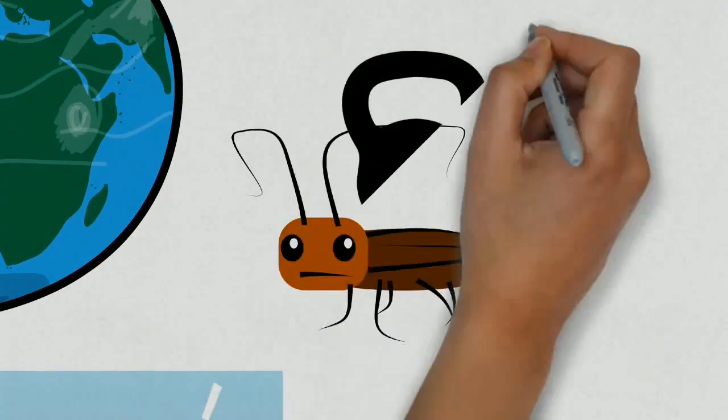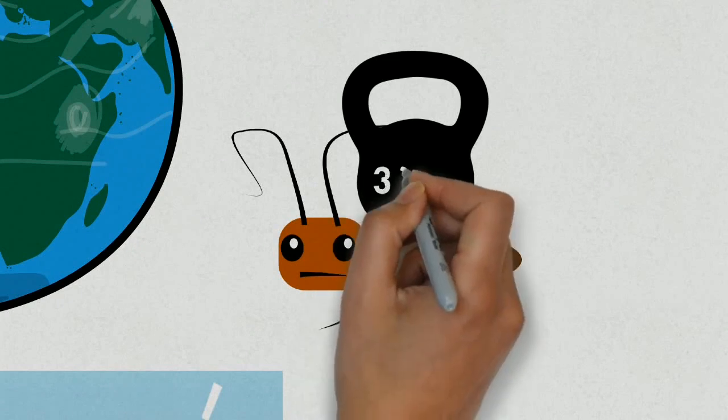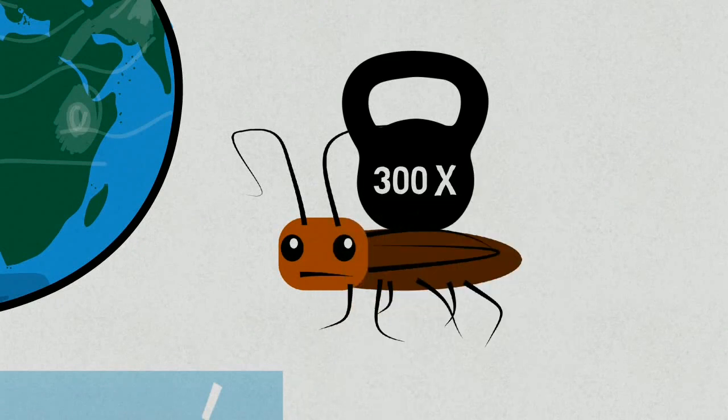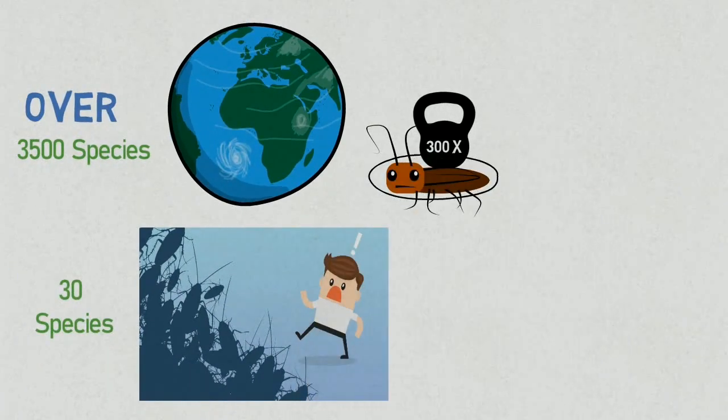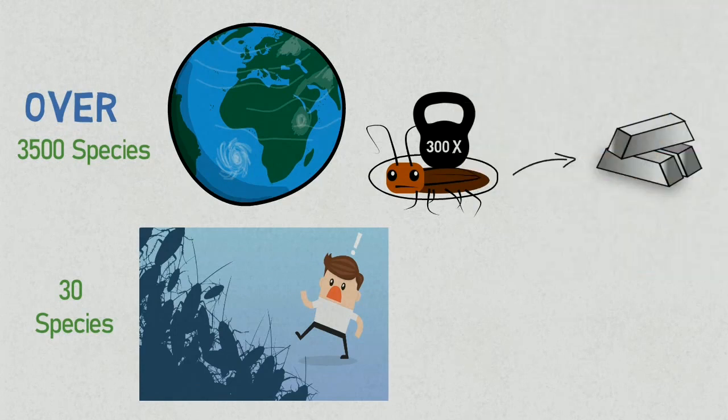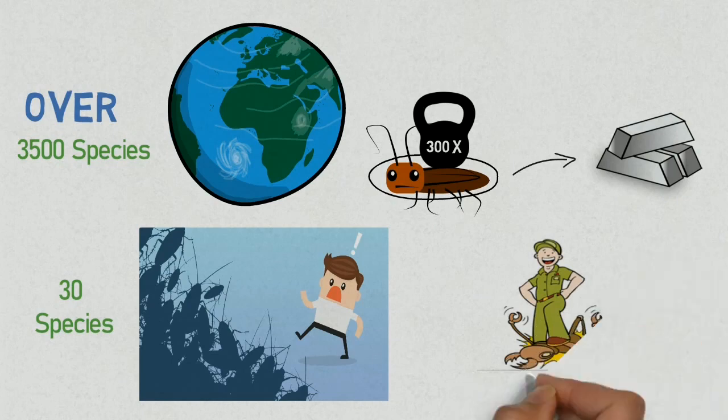Their outer covering can withstand weights up to 300 times their own weight. Their exoskeleton seems to be made of steel. So sometimes you cannot just squash them with your shoe or sandal.